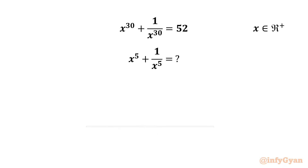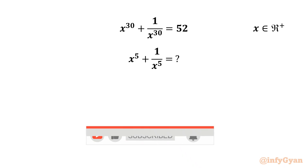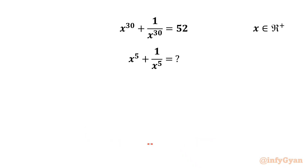Hello friends, welcome back to InfiYarn. Today in this video we are going to take up one very interesting question from algebra. We have x power 30 plus 1 over x power 30 equal to 52. We have to evaluate x power 5 plus 1 over x power 5, given that x is a positive real number.